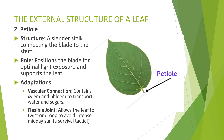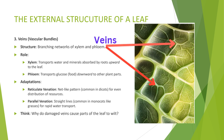3. Veins, sometimes referred to as vascular bundles: veins are the branching networks of xylem and phloem. Xylem transports water and minerals from the roots upward, while phloem transports glucose downward to other plant parts. Veins come in different patterns, like reticulate in dicots and parallel in monocots.